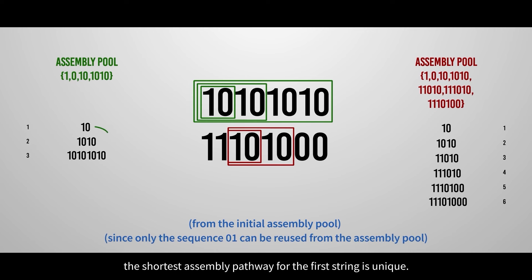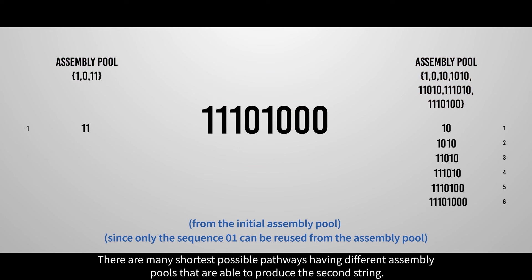Furthermore, the shortest assembly pathway for the first string is unique. There are many shortest possible pathways having different assembly pools that are able to produce the second string.